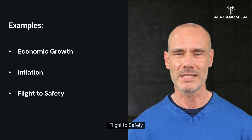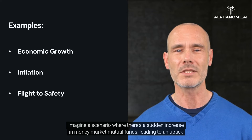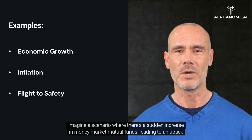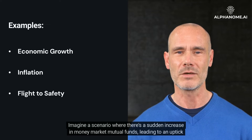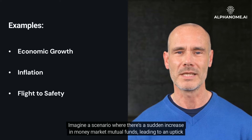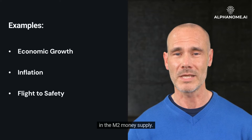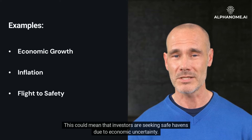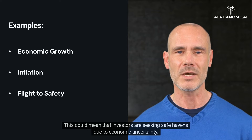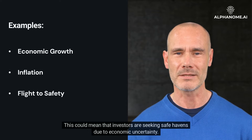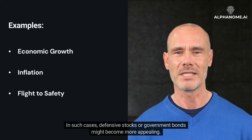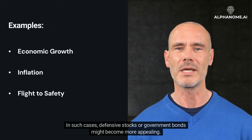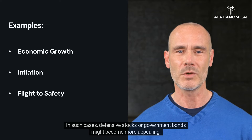Flight to safety example: imagine a scenario where there's a sudden increase in money market mutual funds, leading to an uptick in the M2 money supply. This could mean that investors are seeking safe havens due to economic uncertainty. In such cases, defensive stocks or government bonds might become more appealing.